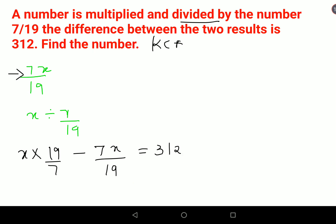Now we will take the LCM. We will have x times 19, so 19²x minus 7²x equals 312 times 19 times 7.